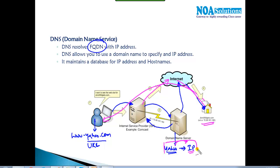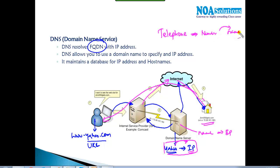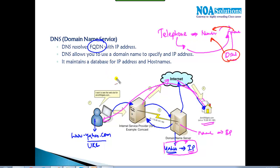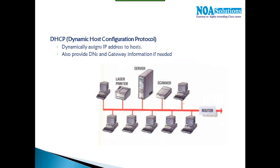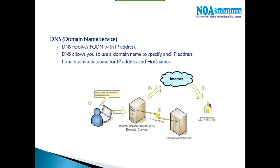The DNS server maintains a database of name-to-IP address mappings — similar to a telephone directory where names are mapped to phone numbers. When you want to call a friend, you search by name and the phone dials the number. Similarly, DNS allows you to use a domain name rather than an IP address. It maintains a database of IP addresses and hostnames to resolve host names into IP addresses.